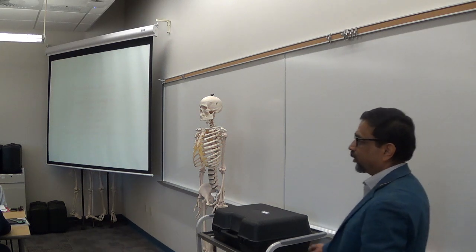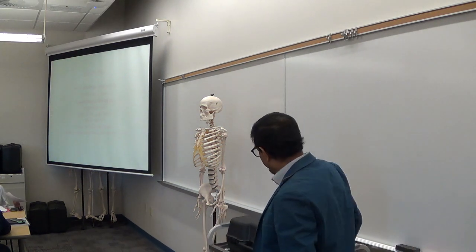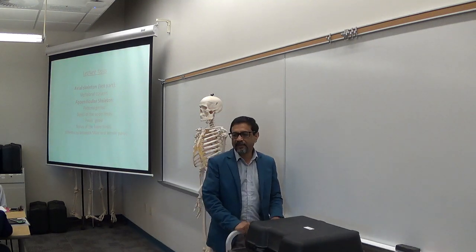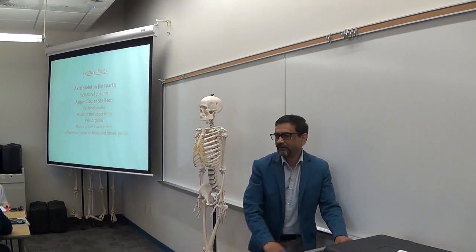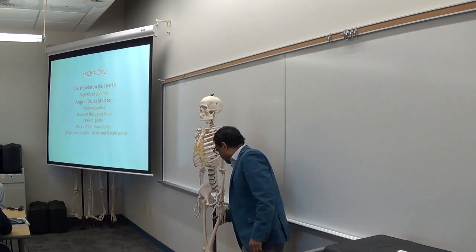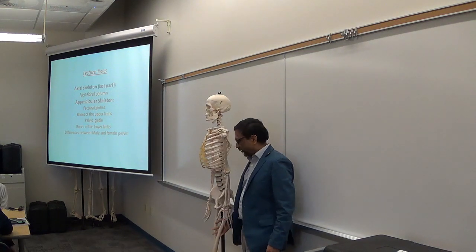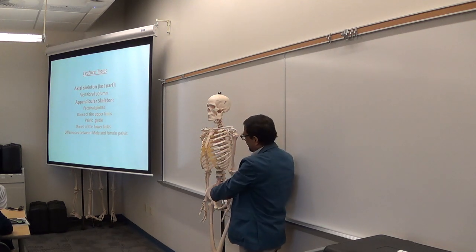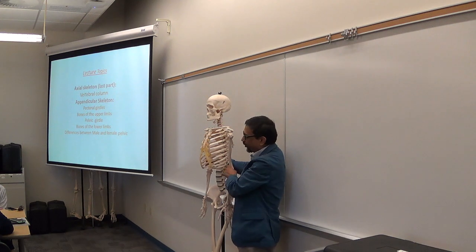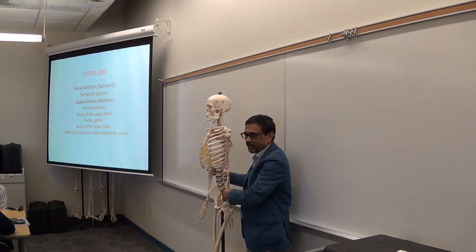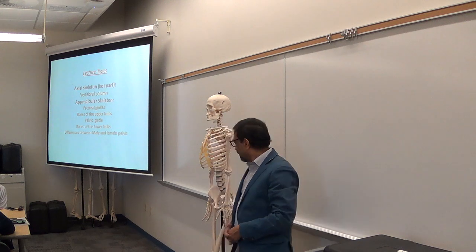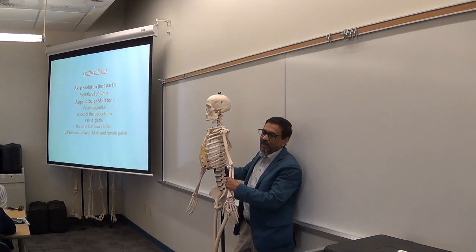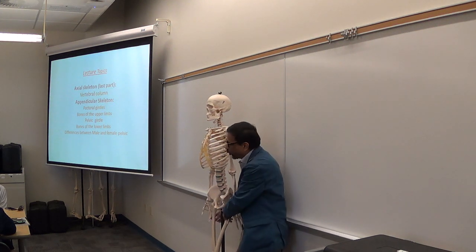Good morning. Today we will talk about the appendicular skeleton. You know that the skeleton has two parts: the axial skeleton or axial part, and the appendicular skeleton or appendicular part. The appendicular skeleton includes the upper and lower extremities.